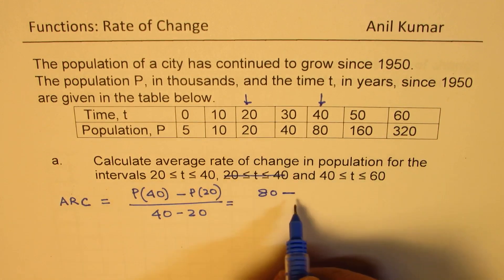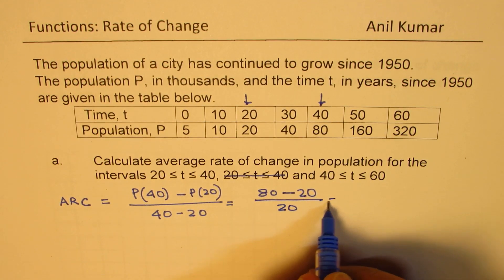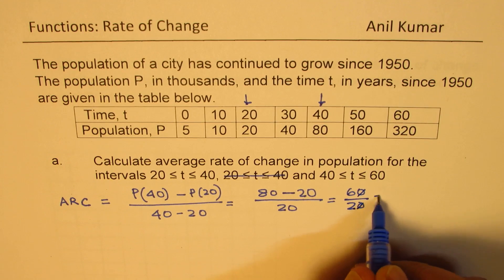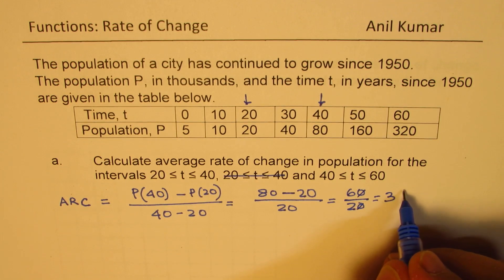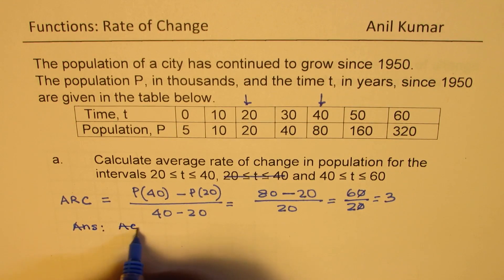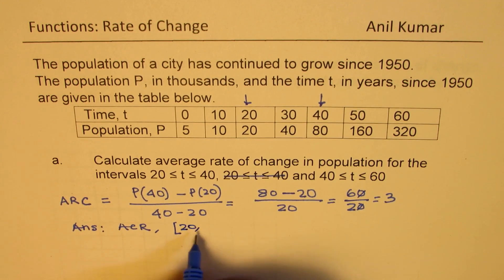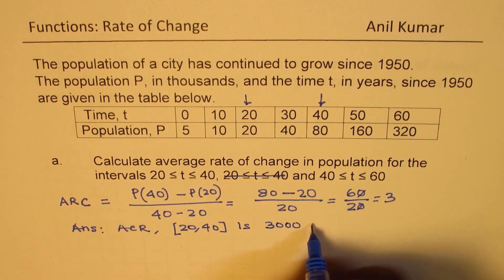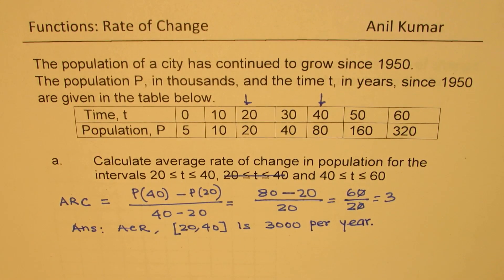At time 40 the population is 80, and at time 20 it is 20, so we have 80 minus 20 divided by 20. We get 60 divided by 20, which equals 3. The population is in thousands, so the average rate of change for the interval 20 to 40 is 3,000 persons per year.